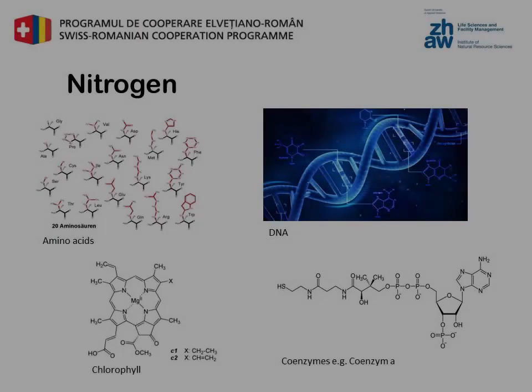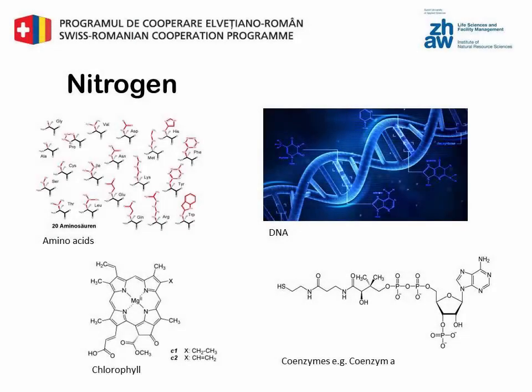Nitrogen is important for enzyme and coenzyme production, and for the production of proteins, nucleotides and porphyrins like chlorophyll. The presence of nitrogen therefore stimulates the vegetative growth.